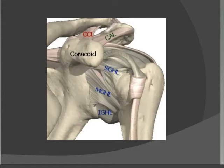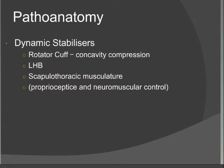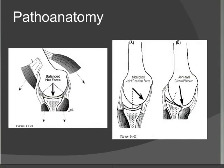The dynamic stabilisers are all the muscular structures around the shoulder joint, most importantly the rotator cuff, which compresses the humeral head into the glenoid cavity. We also consider the long head of biceps and the scapulothoracic muscles. These muscles rely on proprioceptive neuromuscular control, all working in concert to stabilise the shoulder. If one group of muscles — say the supraspinatus — has atrophied, you're likely to get a misaligned joint force leading to subluxation or dislocation. Similarly, abnormal bony anatomy such as altered glenoid version can increase the risk of instability.